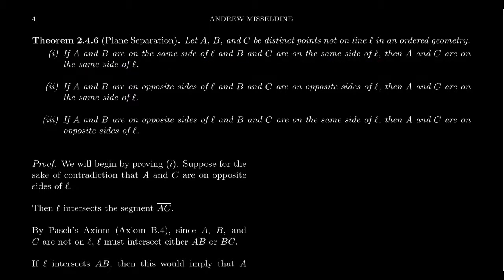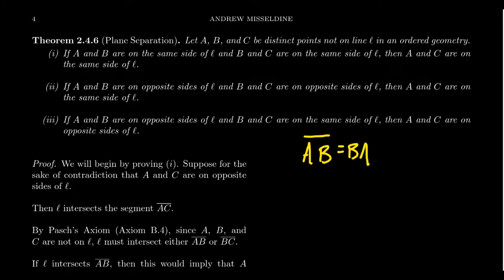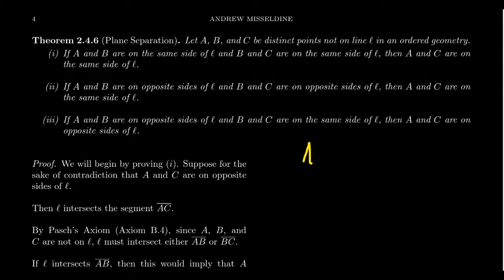It's much more apparent that it's a reflexive relation. By definition, the segment A to A is just the point A, since it includes only the endpoints A and A with nothing between them. If A is not on the line, it doesn't intersect, so A is on the same side as itself. It's also symmetric, which comes from the fact that segment AB equals segment BA — if AB doesn't intersect L, neither does BA. So being on the same side is symmetric and reflexive. The hardest property is transitivity, and we're going to prove that it's a transitive relation.